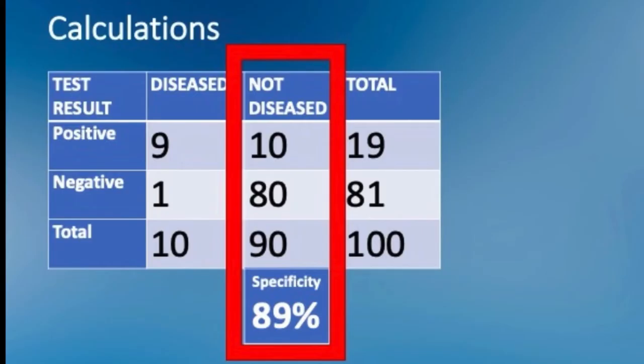Specificity, on the other hand, is the proportion of healthy individuals who will test negative. It is expressed as true negatives divided by true negatives plus false positives. In this case, it is 80 divided by 90, or 89%. Tests with high specificity help us in ruling in a disease — remember the acronym SPIN: specificity helps you rule in a disease.